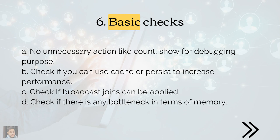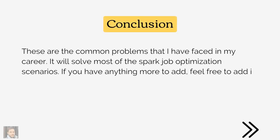The final scenario in my list is basic checks to improve performance — things I've noticed during peer reviews. First, make sure you don't have unnecessary actions in the code like count or show. Developers put these in while debugging and forget to remove them — this will hurt performance. Check if you can use caching to increase performance, but don't cache or persist very large tables or DataFrames, as it will hinder performance instead of improving it. Also, check if you can apply broadcast joins. The broadcast property is set to 10 MB by default — consider increasing it to 20 MB or 50 MB if appropriate.